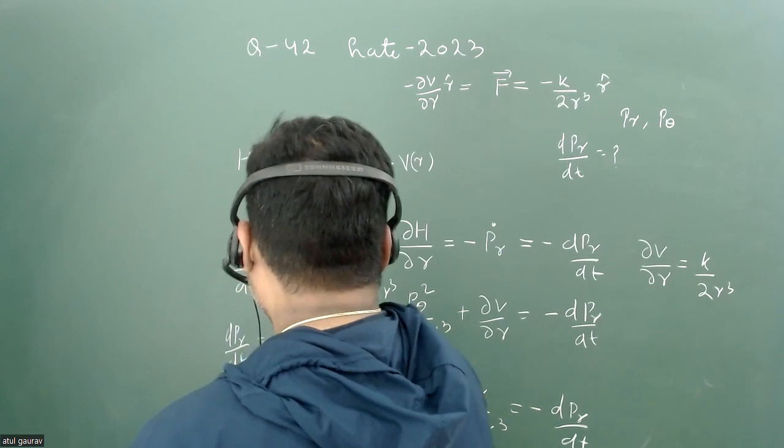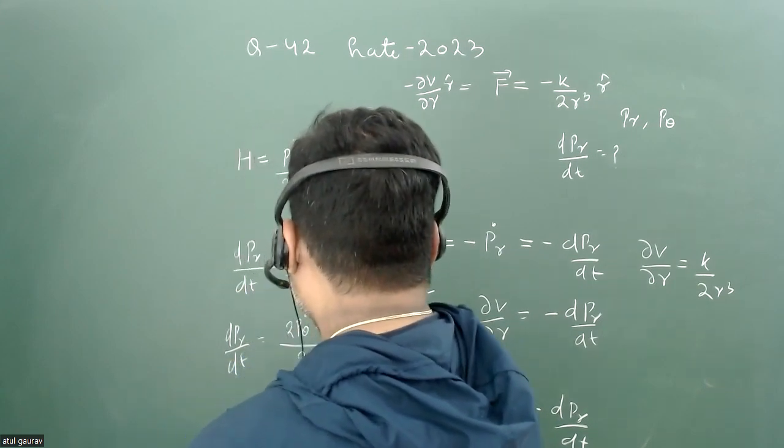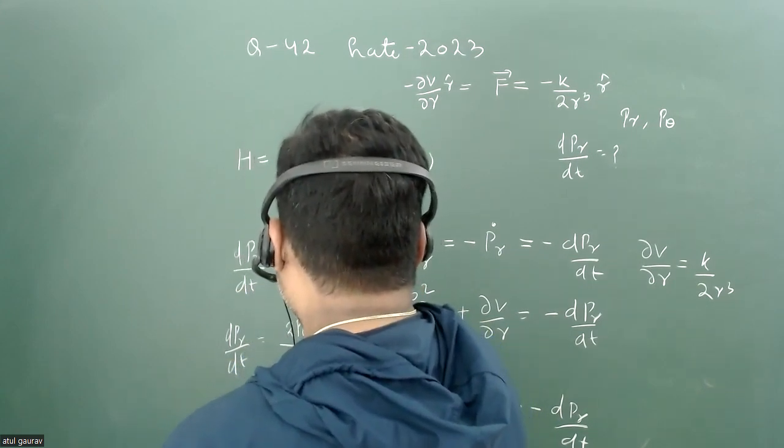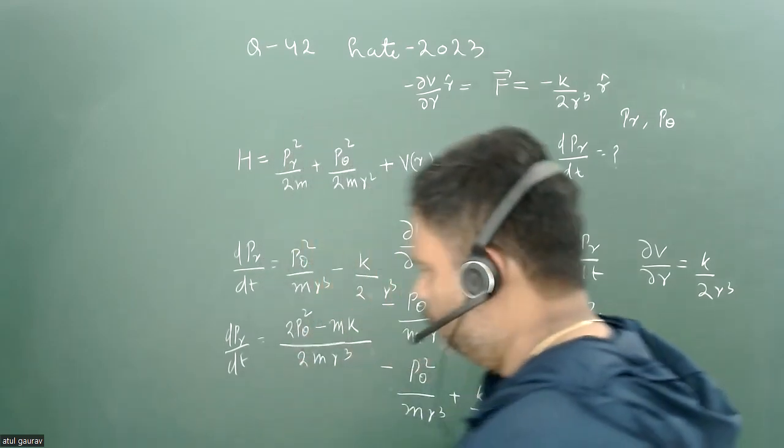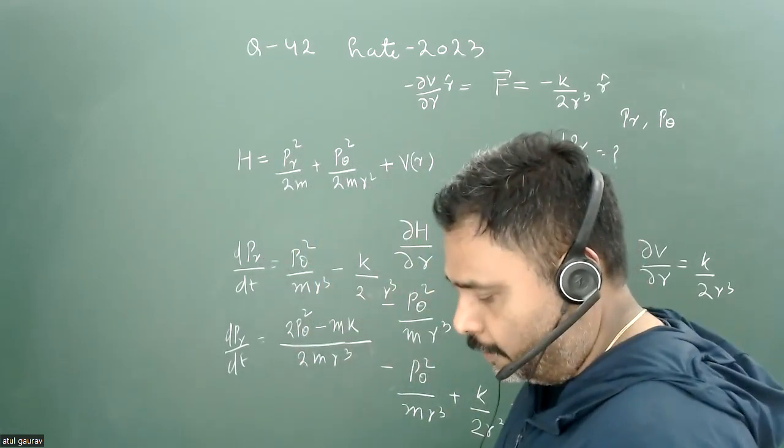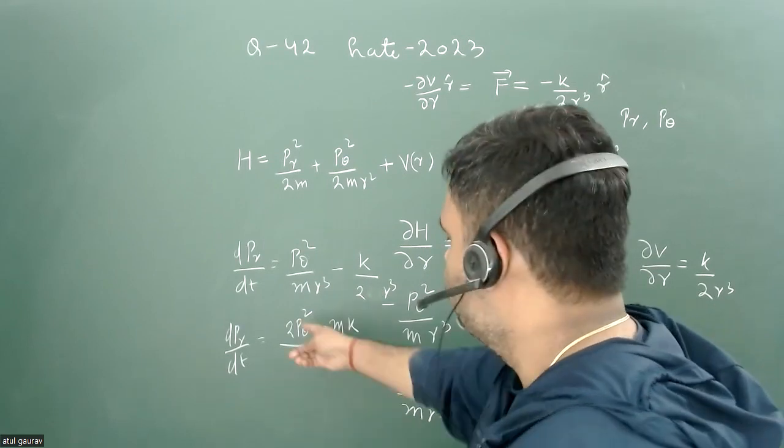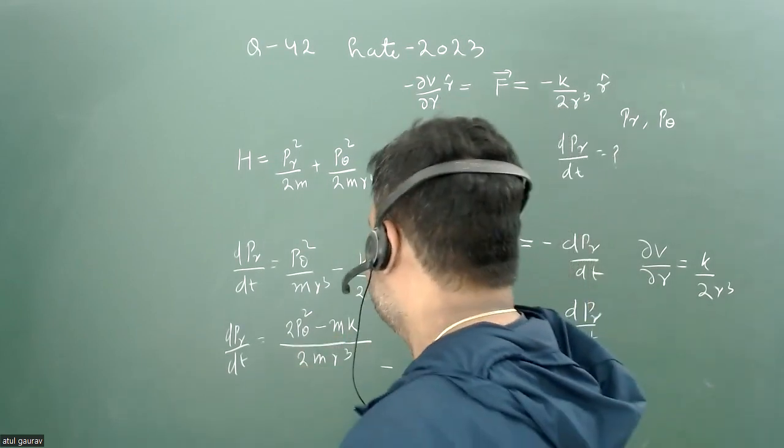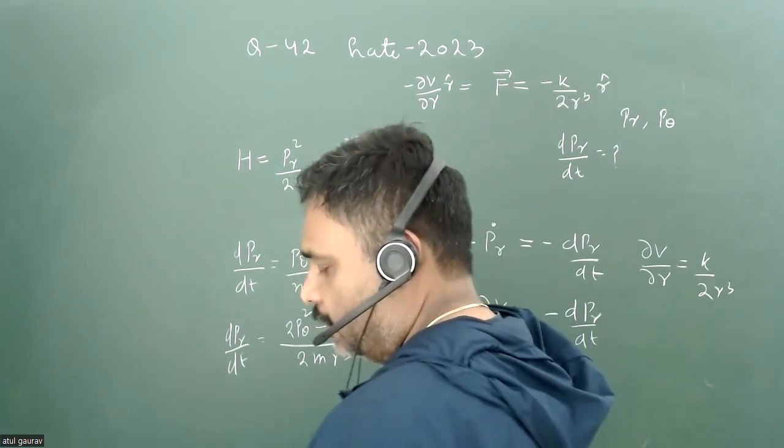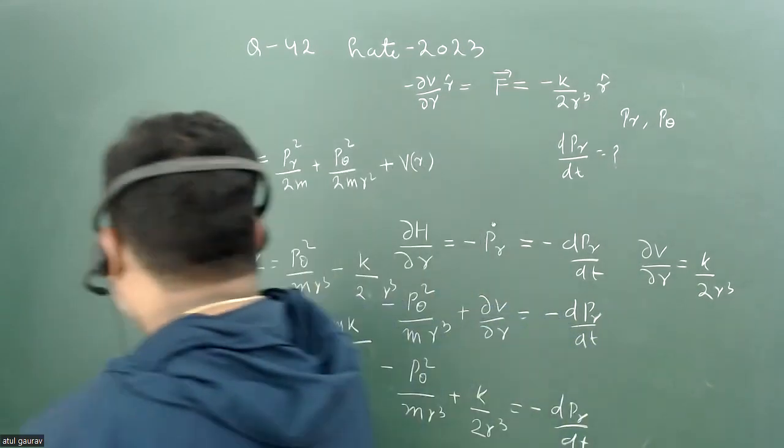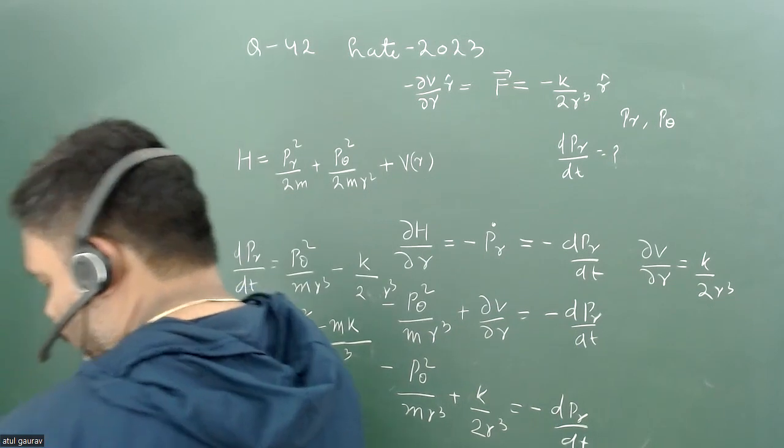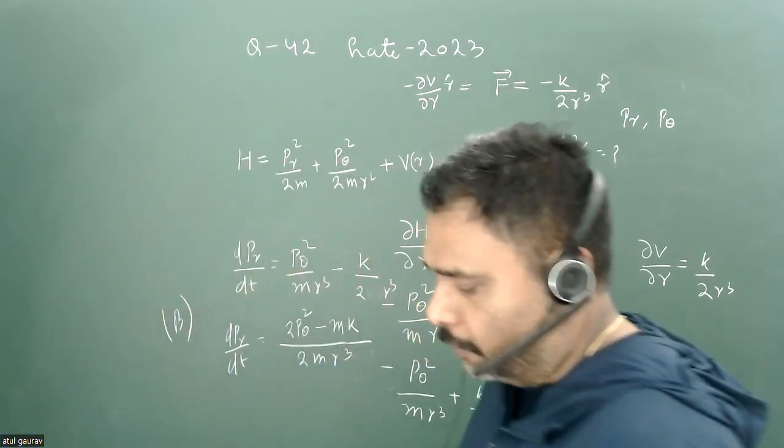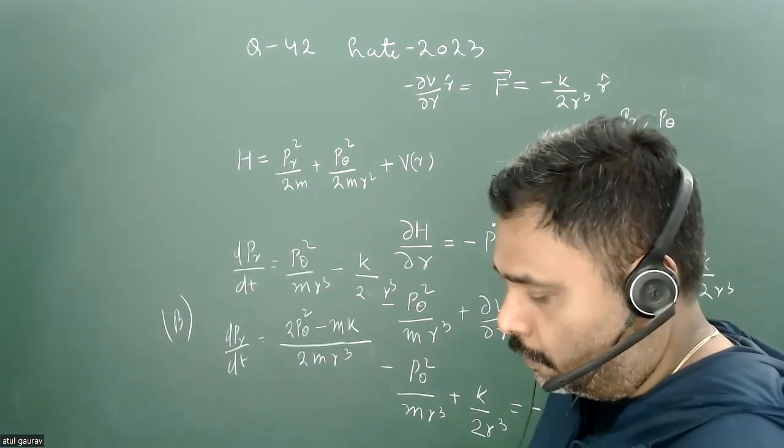So basically 2p_theta² minus mk. This value should be the answer. Yes, 2p_theta² minus mk over 2mr³ will be the answer here, and I think option D is correct.